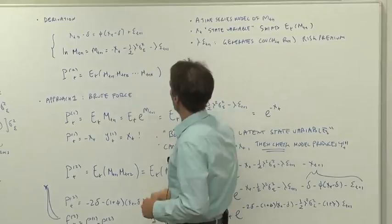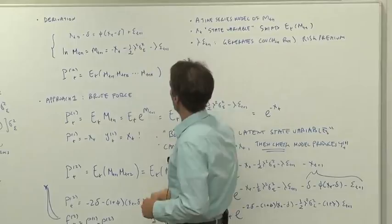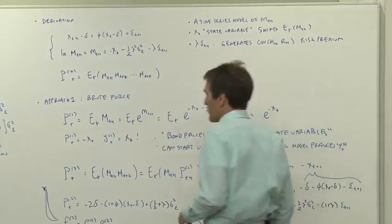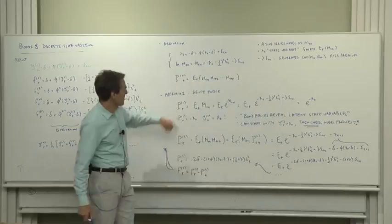So with this time series model for the discount factor, then we'll generate bond prices as expected future discount factors. There's a bunch of approaches to how do you do this and not let the algebra get completely nuts on you, but this model is so simple we can just do brute force and then talk about other more clever ways to get at it. So let's do it by brute force.